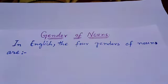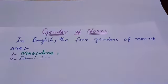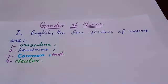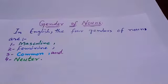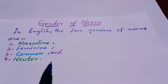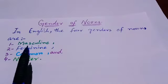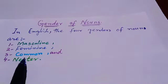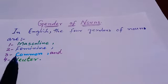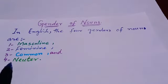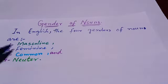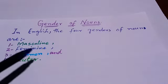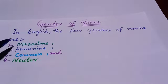جو انگلیش میں چار gender ہیں وہ یہ ہیں: نمبر 1 is masculine، نمبر 2 is feminine، نمبر 3 is common، اور نمبر 4 is neuter.